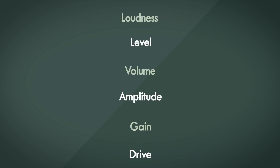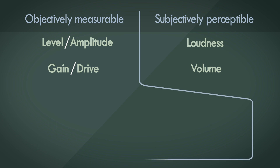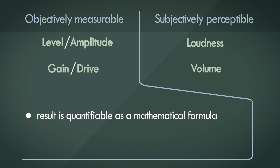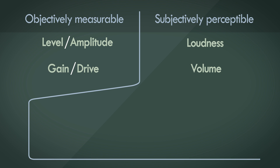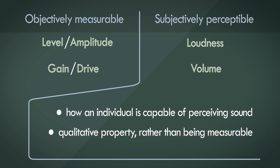These acoustical terms can be broadly categorized as either being objectively measurable or subjectively perceptible. Objectively measuring something means that you're quantifying the result as a mathematical formula or a number, and you can repeat the measurements under the same conditions any number of times and should end up getting the same result every time. Subjective perception is a lot more hairy — it's how an individual can perceive something, and it's more a qualitative measure than something that can be quantified into a number.